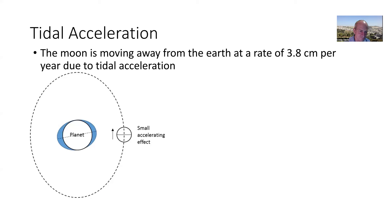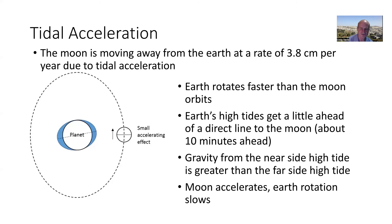Look at the diagram. The Earth's planet is rotating faster than the moon is orbiting — Earth does a full rotation in 24 hours, whereas the moon takes a full month to go around. The moon pulls those tides out, but then the Earth rapidly rotates them ahead. Earth's high tides get a little bit ahead of a direct line to the moon — about 10 minutes ahead. The gravity from the near-side high tide is greater than the far-side high tide, and this causes the moon to actually accelerate a little bit.